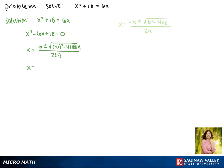Working this out, this gives us x equals 6 plus or minus the square root of 36 minus 72, all divided by 2.